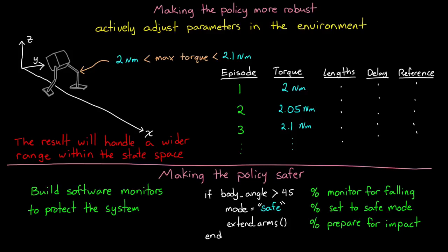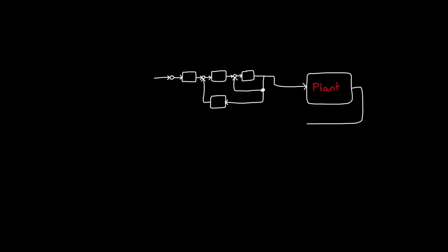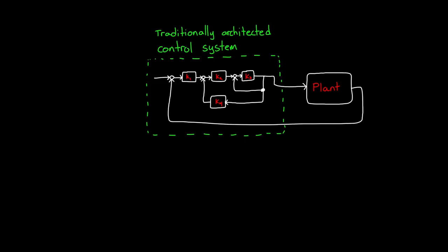Both the fix to increase robustness and safety are kind of workarounds to the limitations that we have with a learned neural network policy. However, there is a way to use reinforcement learning and still be able to take advantage of the result being as robust, safe, changeable, and verifiable as a traditionally architected control system. And that is by using it simply as an optimization tool for a traditionally architected control system.